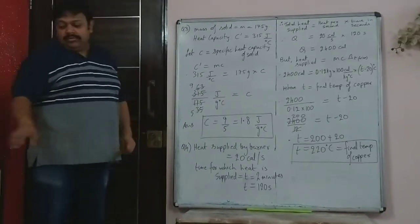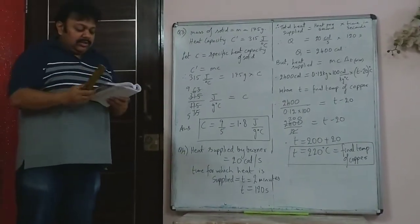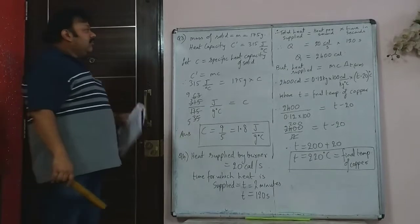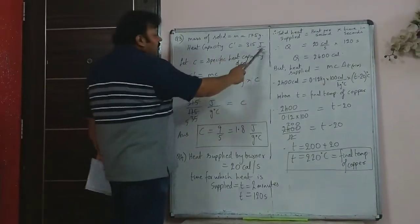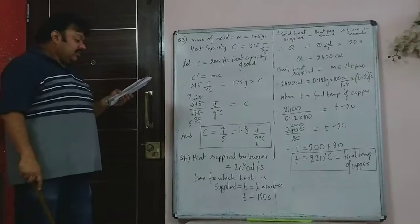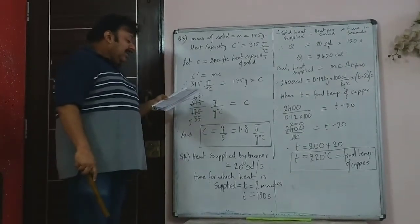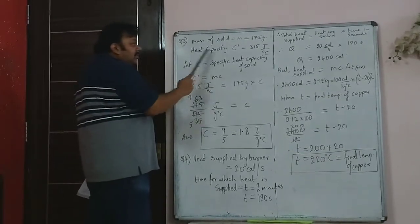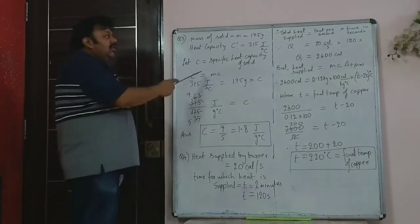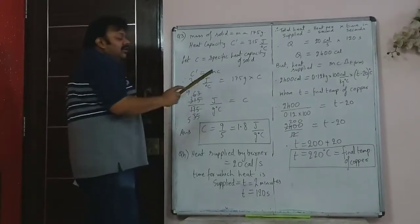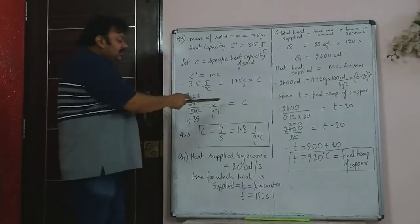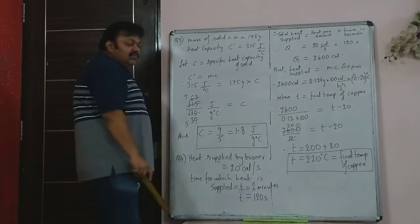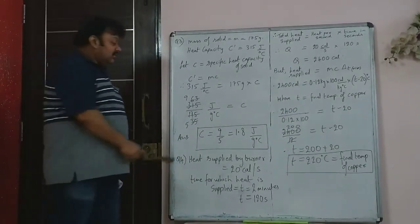Third sum: the heat capacity of a solid of mass 175 g is 315 J/°C. Calculate specific heat capacity. Using C' = mC, we get C = C'/m = 315/175 = 1.8 J/g°C. Simple sum — substitute values with units and the unit of the answer comes automatically.